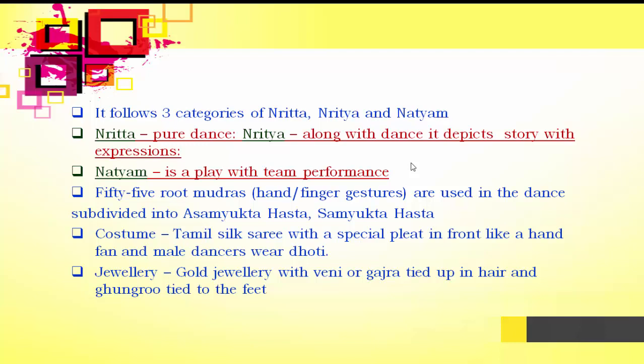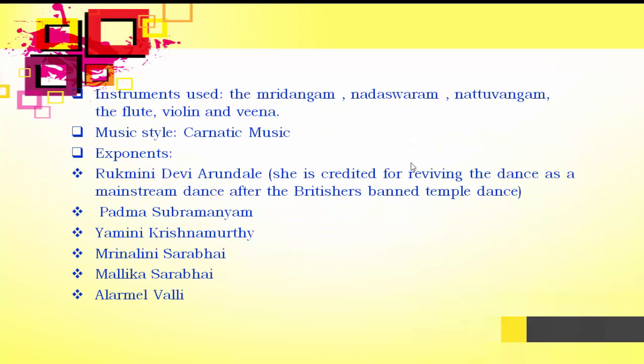Regarding the costume, Bharatnatyam dancers normally wear a Tamil silk saree with a special pleat in front like a hand fan. Male dancers wear dhoti. The jewellery worn is gold, with a venya gachra tied in the hair. The most prominent accessory is the ghungroo tied to the feet. The dance is accompanied by instruments: Mridangam, Naddaswaram, Nattuvangam, flute, violin and veena. The music style that accompanies this dance is Carnatic music.